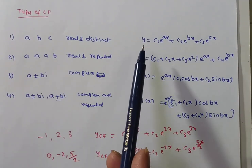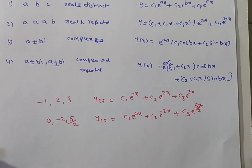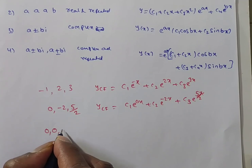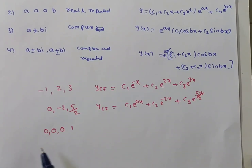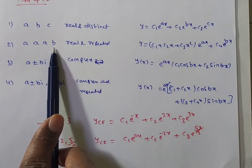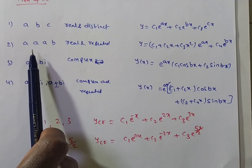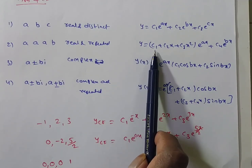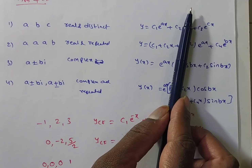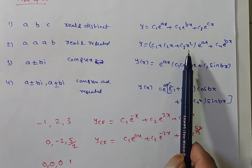Sometimes roots may be repeated. For example, if m³ = 0, then m = 0, 0, 0 (repeated three times). If roots a, a, a are repeated three times and b is non-repeated, write CF = (c₁ + c₂x + c₃x²)eᵃˣ + c₄eᵇˣ. If a is repeated twice, write (c₁ + c₂x)eᵃˣ; four times: (c₁ + c₂x + c₃x² + c₄x³)eᵃˣ.